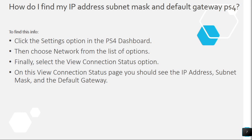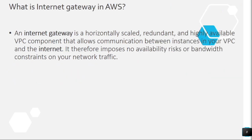Question 6: How do I find my IP address, subnet mask, and default gateway on PS4? To find this info, click the Settings option in the PS4 dashboard, then choose Network from the list of options. Finally, select the View Connection Status option. On this page you should see the IP address, subnet mask, and the default gateway.